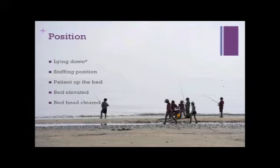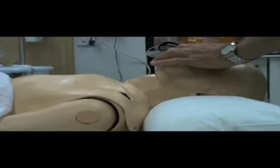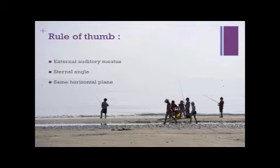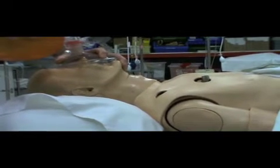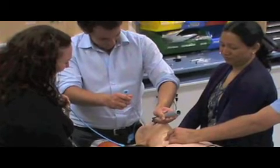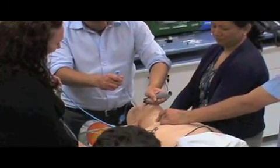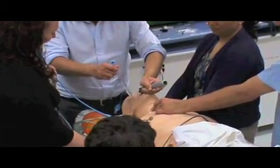The patient should be positioned in the best possible position for the first attempt. Sometimes the patient cannot be laid flat due to respiratory distress. The patient should be placed in the sniffing position unless there are contraindications, such as suspected unstable cervical spine injury. A good rule of thumb is to ensure that the external auditory meatus is in the same horizontal plane as the sternal angle. In heavily obese patients, this may require several pillows under the upper back and behind the head. The patient should also be positioned close to the top of the bed, with the bed height elevated to an appropriate level. Take the time to clear the bed head of obstructions such as IV lines, ventilator tubing, IV poles and other equipment.